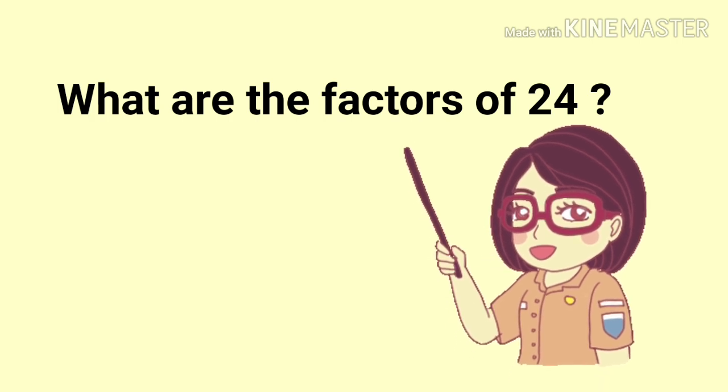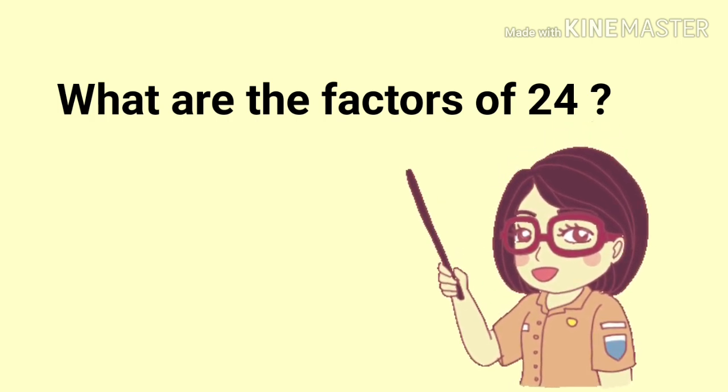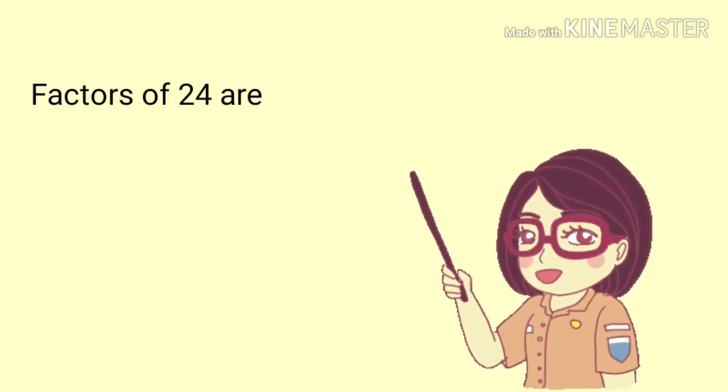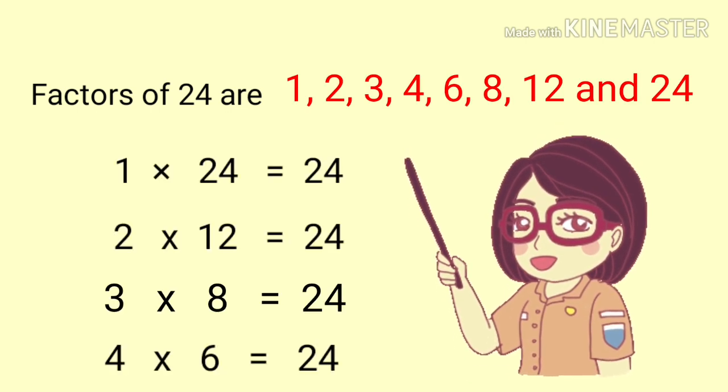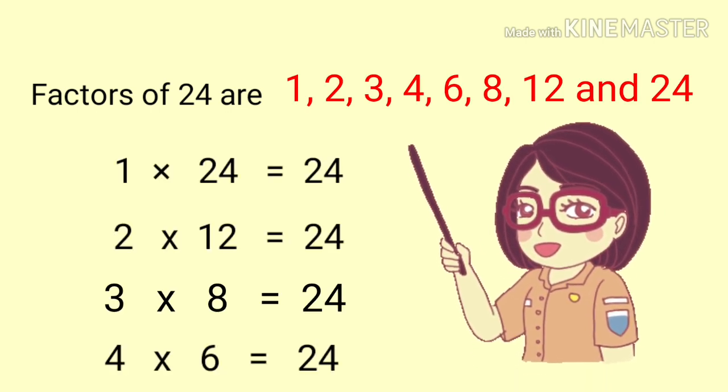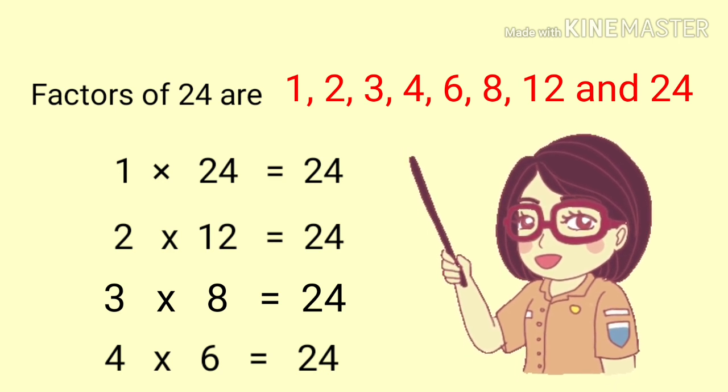So what are the factors of 24? The factors of 24 are 1, 2, 3, 4, 6, 8, 12, and 24.